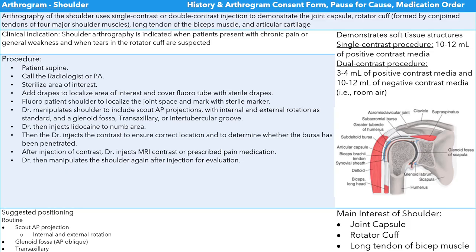Shoulder arthrogram. Again, you're going to need your history, consent form, your pause for cause or timeout, and your medication order. The purpose of the shoulder arthrogram uses single or double contrast injection to demonstrate the joint capsule, rotator cuff formed by conjoined tendons and four major shoulder muscles, long tendon of the bicep muscle, and articular cartilage. The shoulder arthrogram is indicated when the patient presents with chronic pain or general weakness and tears in the rotator cuff are suspected.